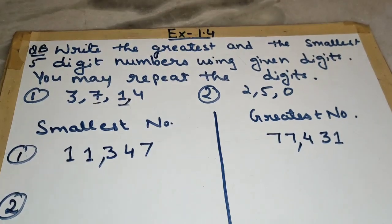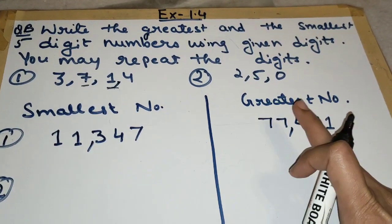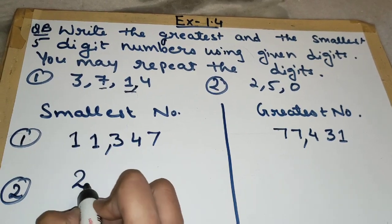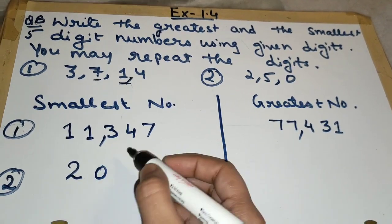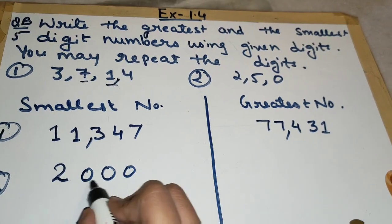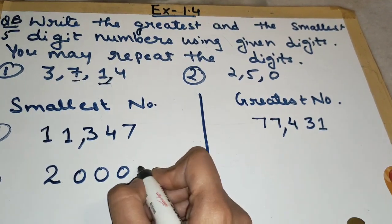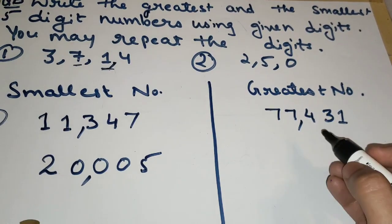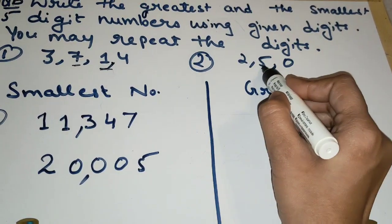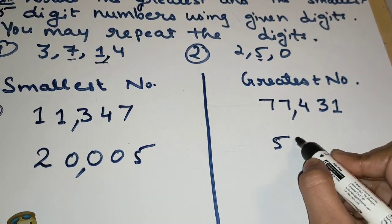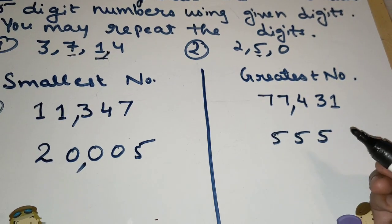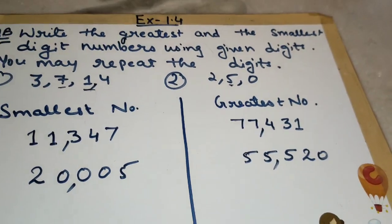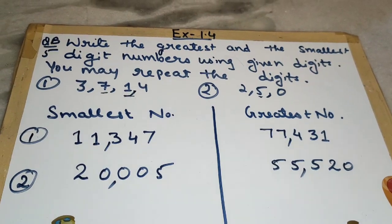Next is the digits 2, 5, and 0 — we need to make a five-digit number. For the smallest number, we never start with zero, so first we write 2, then 0, 0, 0, and then 5. We get twenty thousand and five. For the greatest number, we repeat the greatest digit 5 three times: 5, 5, 5, then 2, then 0 — we get 55,520. In this way you have to do the question.